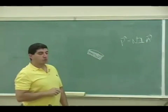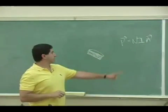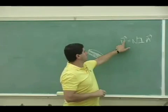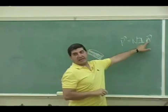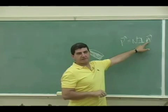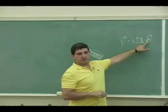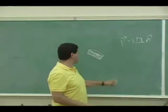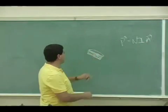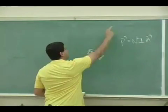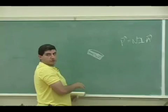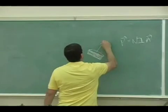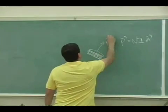The direction of the magnetic moment vector is the same as the area vector. In calculus, the area vector of a surface always comes out of the surface according to the right-hand rule, so the magnetic moment vector points in that direction.